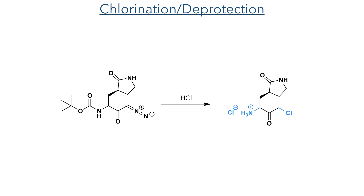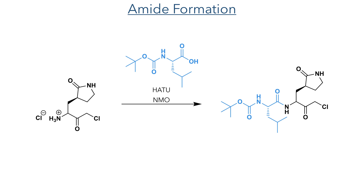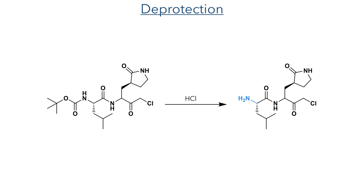Reaction with concentrated HCl converted the diazo group to a chloride, while also deprotecting the Boc group to produce an amine salt. This compound was then reacted with Boc-protected leucine using HATU as a peptide coupling reagent to form the peptide bond. Another Boc deprotection using HCl then followed to produce an amine.